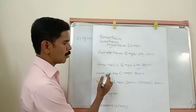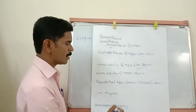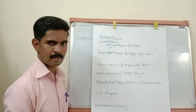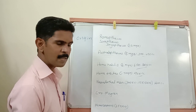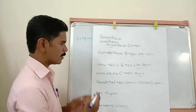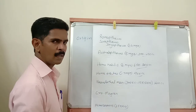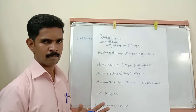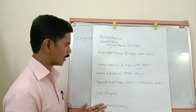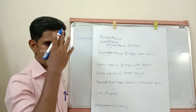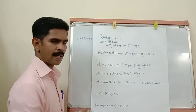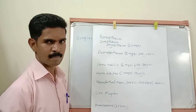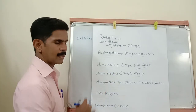Next to Homo Habilis is Homo Erectus. They were lived in the world 1.7 million years ago, and their brain capacity is 900 cc. They closely resembled humans, their skull region was flat, and they were meat eaters.